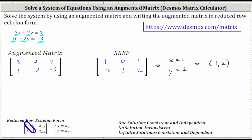And let's go ahead and check this. Starting with the first equation, we substitute one for X and two for Y, which gives us three times one plus two times two equals seven. Simplifying the left side, we have three plus four, and three plus four is seven.